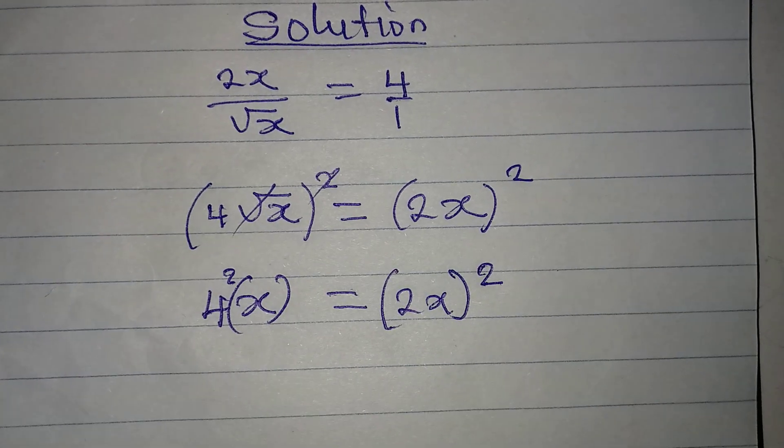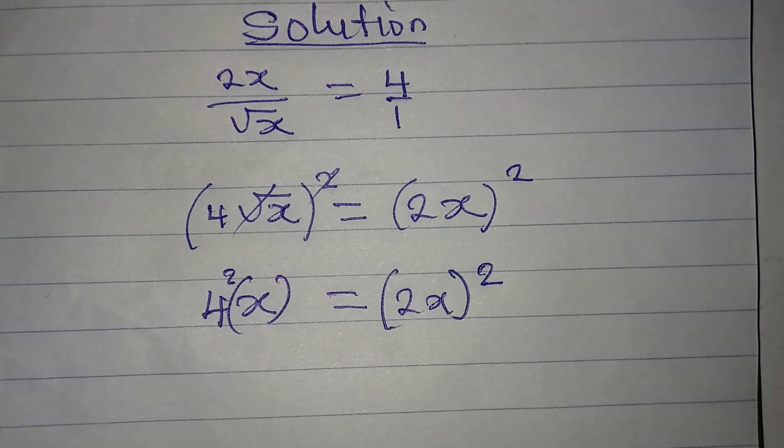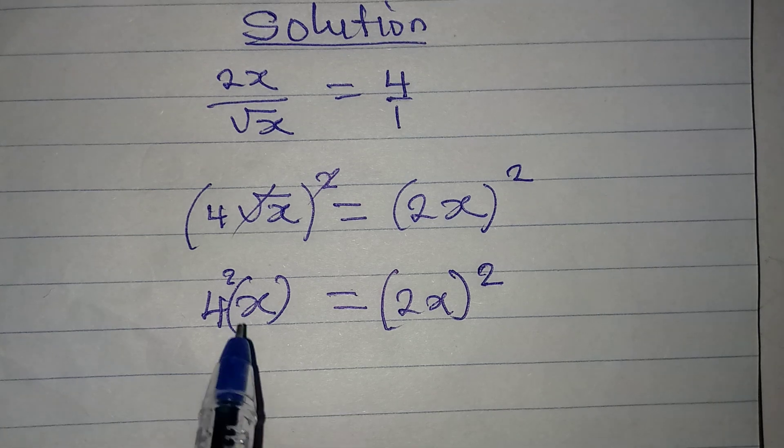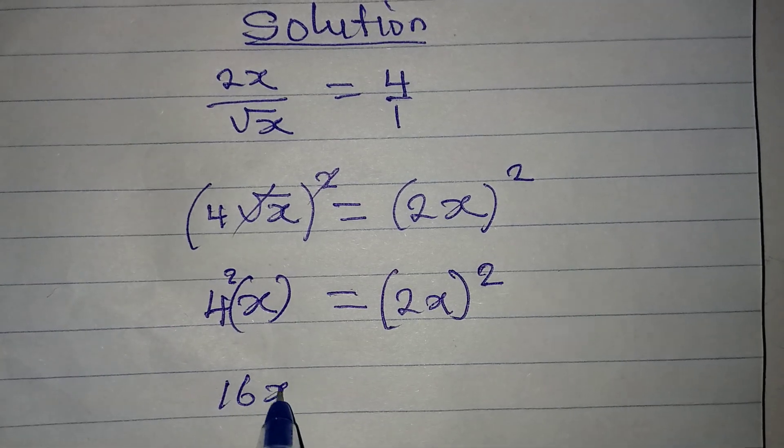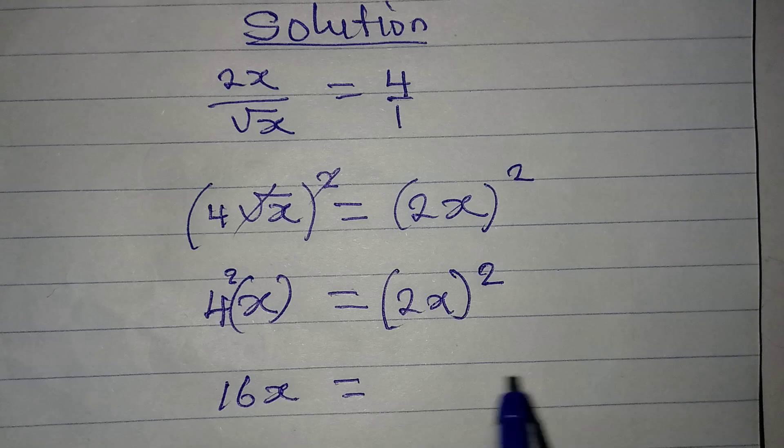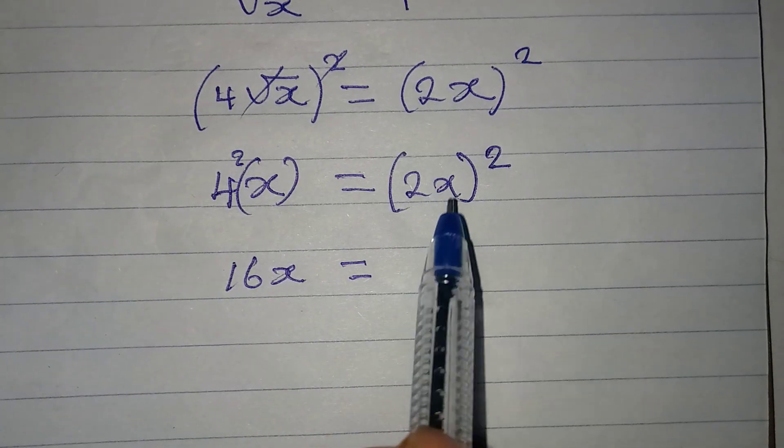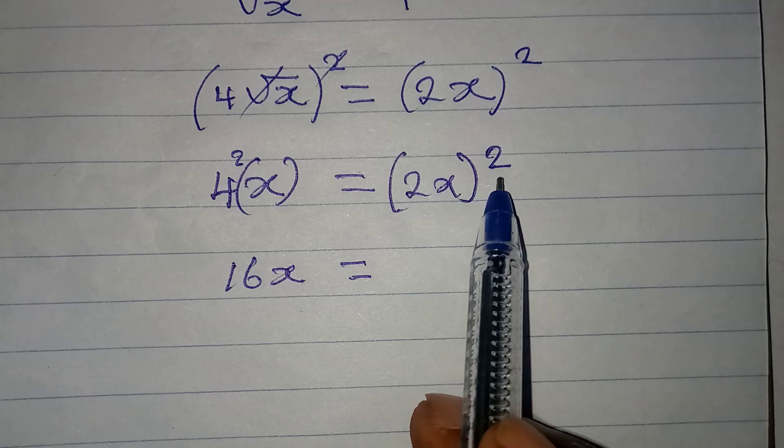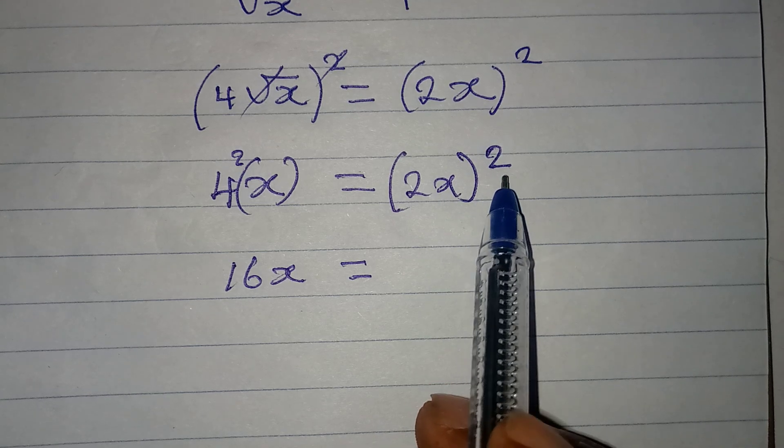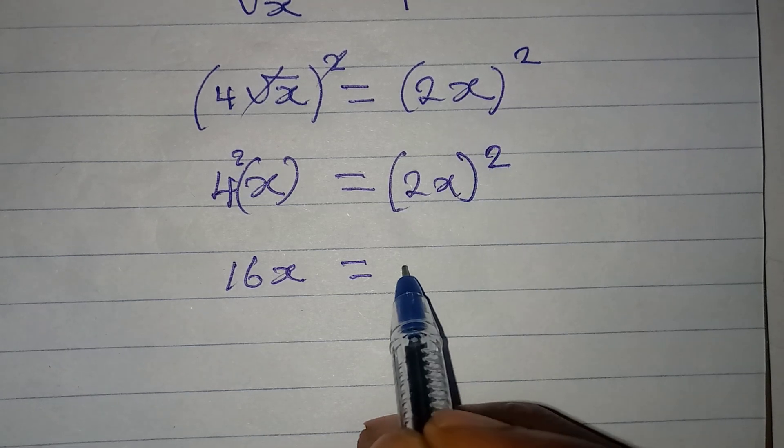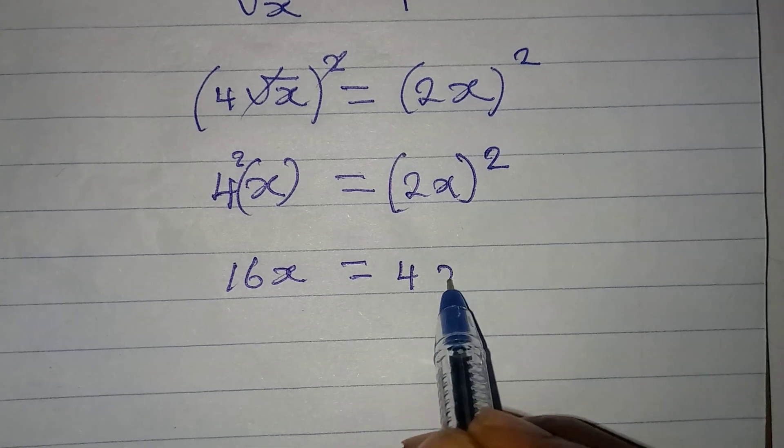Now, if you fail to square the 4, then you have a wrong answer. So, here now we're going to have 16x, which will be equal to... And then, in this case now, 2 and x are both having the square here. So, it's going to be 2 squared first, which will give 4 and then x squared.